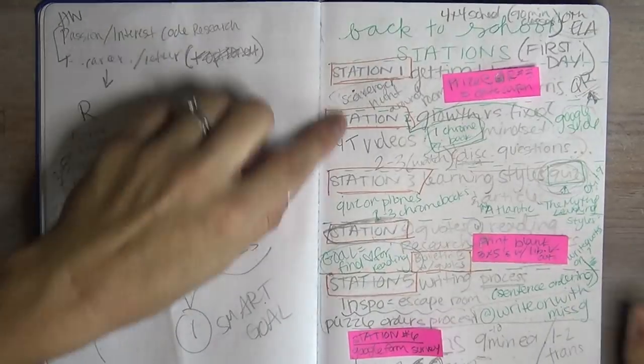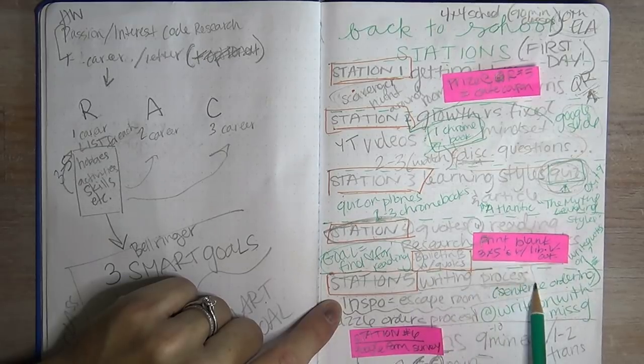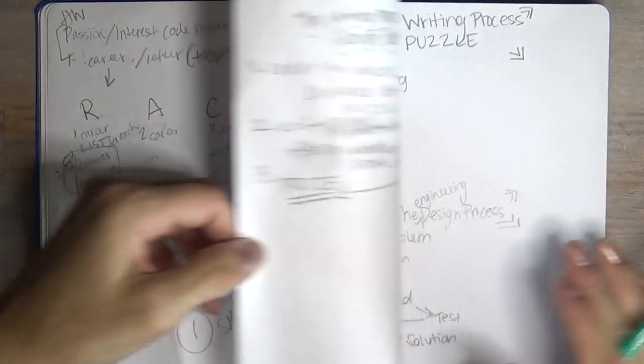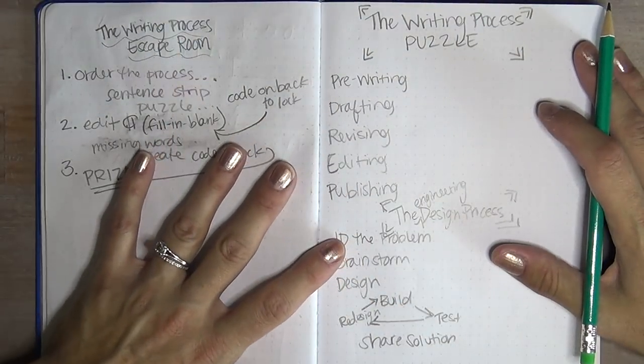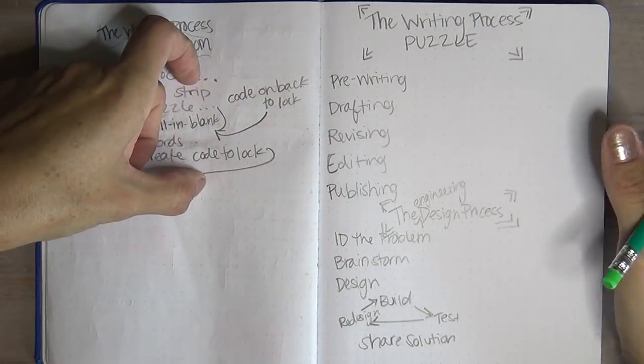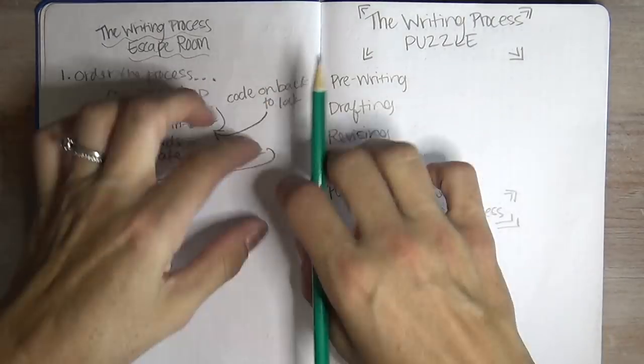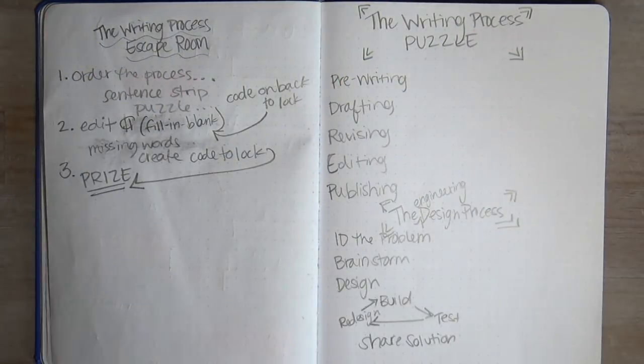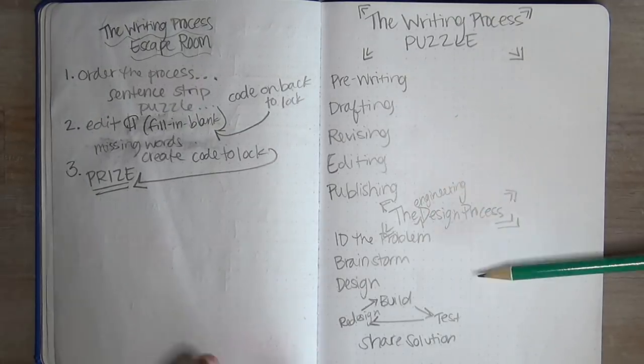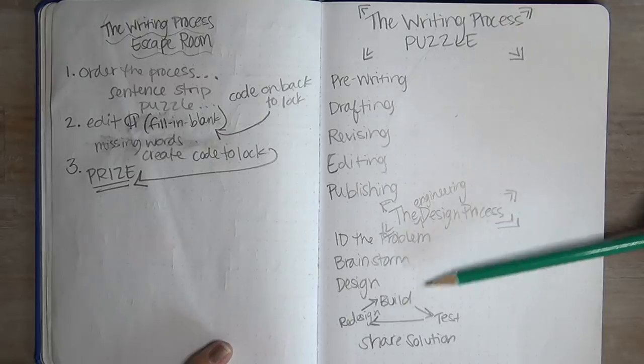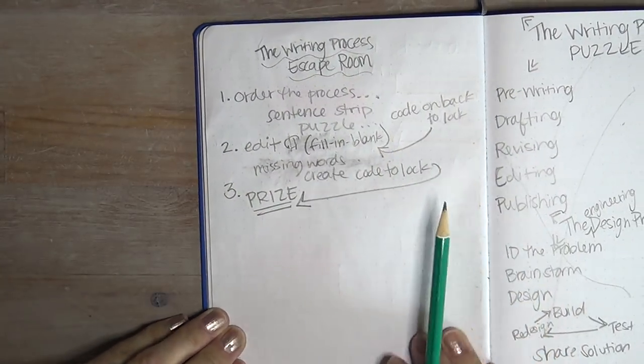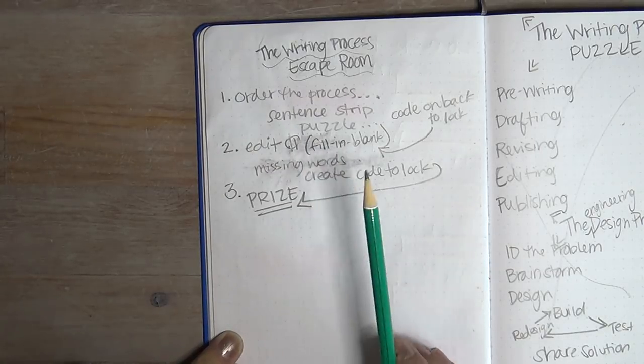Today we are going to focus on station five. This station was going to be some sort of a puzzle having to do with the writing process. And then as I started thinking about it, I was like, maybe it's going to be a bunch of like sentence strips and then you chop them up and then kids have to reorder the words. I was thinking that for the writing process. And then I started thinking through what that would look like and I decided no, that's super lame. So instead I came over to this idea, which is a mini escape room on the writing process. And this is super fun and cool.